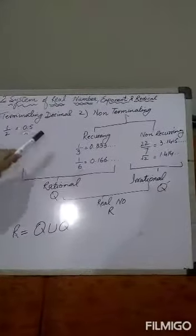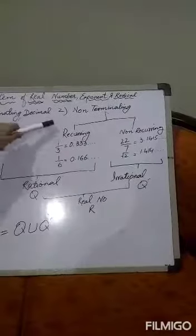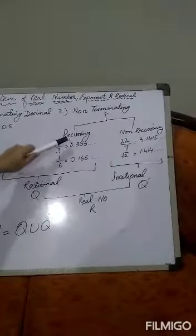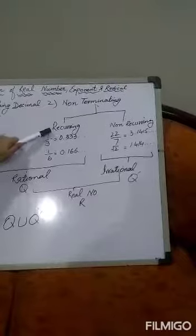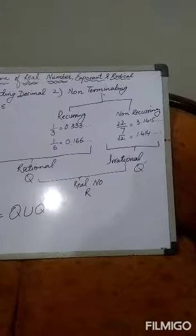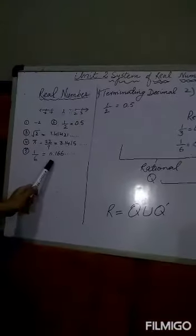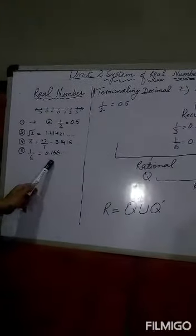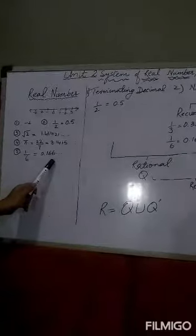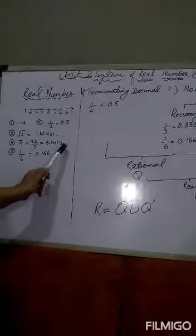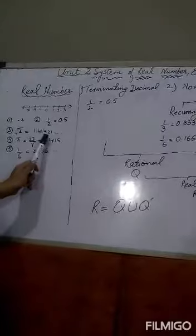Non-terminating decimals can be divided into two parts: recurring and non-recurring. For example, 1/6 equals 0.1666... and pi equals 3.1415... — both are non-terminating decimals.